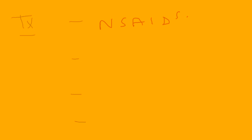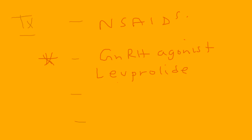For treatment, there are stages based on severity. For mild discomfort, NSAIDs such as naproxen or ibuprofen can be used. The main medical treatment for endometriosis itself is a GnRH agonist. The medication we're talking about is leuprolide — brand name Lupron in North America. This drug suppresses estrogen production, which prevents the ectopic endometrial tissue from growing, since estrogen and progesterone receptors on that tissue drive its growth.